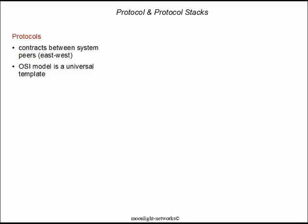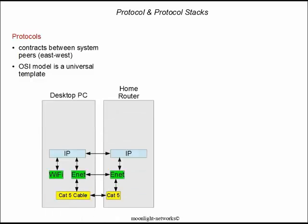Protocols are essentially contracts between what I'll call east-west systems. They are loosely based on the OSI model. The principles of the OSI model are very important — that is, a segregation of responsibility among various layers and contract peering, meaning having a contract between peer implementations of a protocol. The exact layers of the OSI model don't necessarily map well into internet protocols, but they do give us a framework and template that is well used in many systems, including the internet.